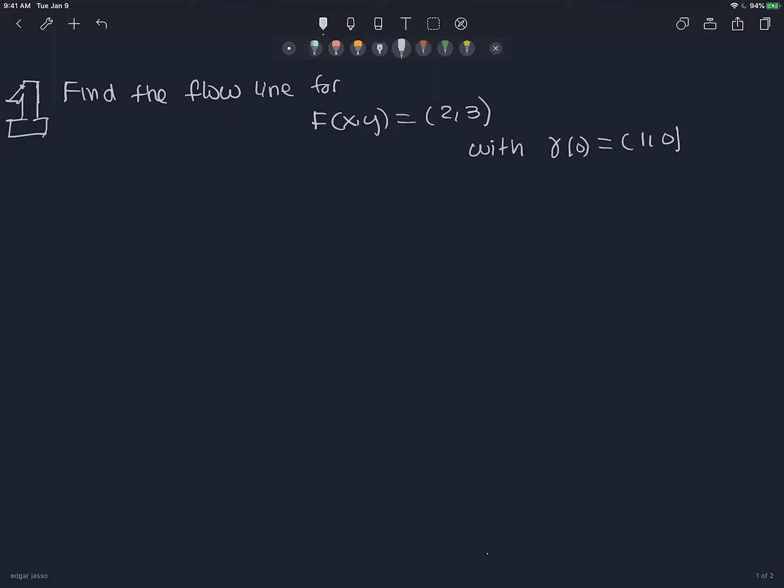So we have a vector field. For me, a vector field is any function, in this case, from R² to R². And we think of it like this: the inputs of the function, we think of them as points in R².